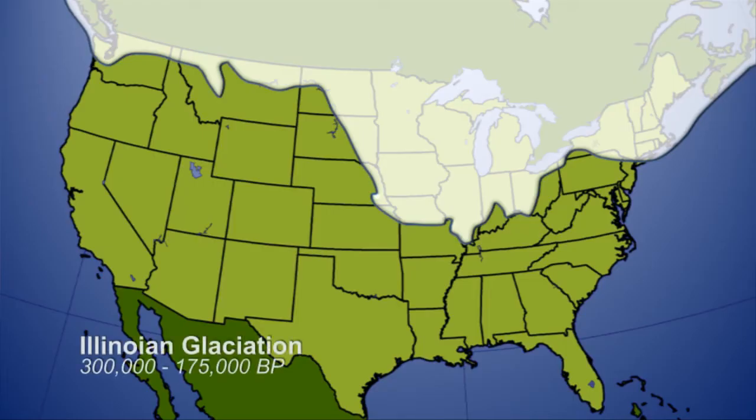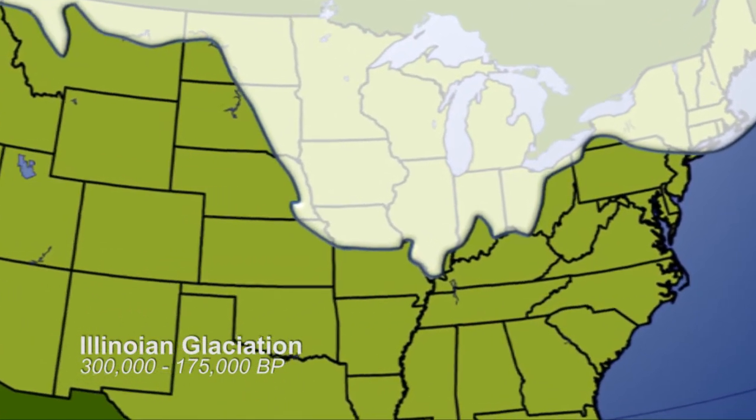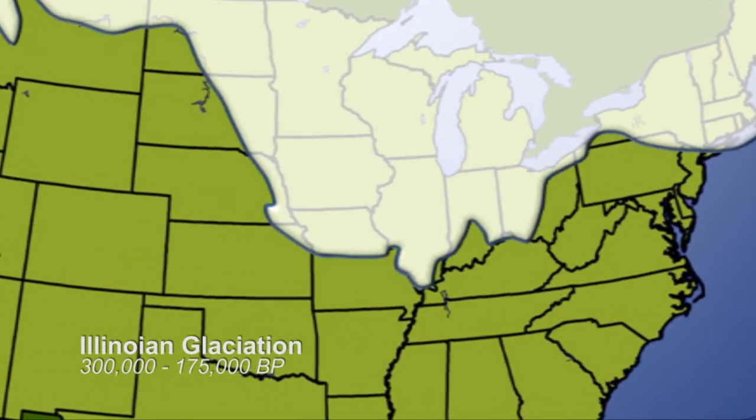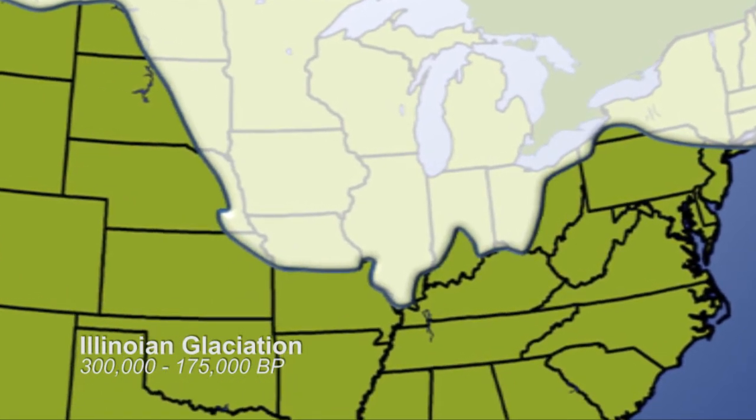There was another glacial episode previous to that that did cover almost all of the state. The one that covered nearly all the state was called the Illinoisan Glacial Episode, and it went all the way down to the Shawnee Hills and covered everything but just a fragment on the west side of the state and on the northwest side of the state.